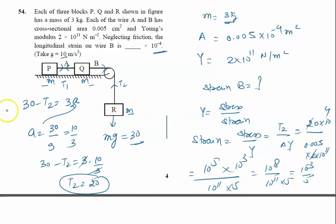Right now we are getting 10^-3 / 5, but we have to write it as 10^-4. It means we can multiply and divide by 10. This is 10^-4, then 10 divided by 5 is 2. So the right answer of this problem is 2.